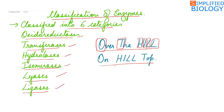Same with 'On Hilltop': O for Oxidoreductase, H for Hydrolase, I for Isomerase, L for Lyase, L for Ligase, and T of Top is for Transferases.